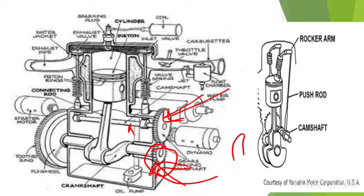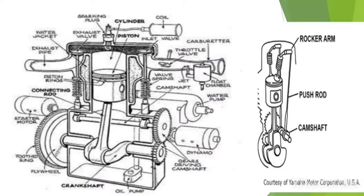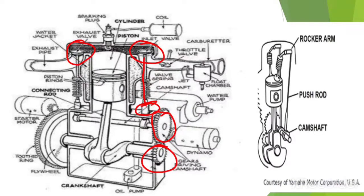The camshaft has cam lobes with a sharp projection. When the camshaft gear gets its drive from the crankshaft gear, the cam lobe touches the tappet, which is connected to the push rod and then to the valve — this mechanism is the same for the exhaust valve as well. When the sharp projection of the cam lobe comes in contact with the tappet, the tappet moves upward and the valve opens. When the flat part of the cam lobe comes in contact with the tappet, the tappet moves downward and the valve closes.